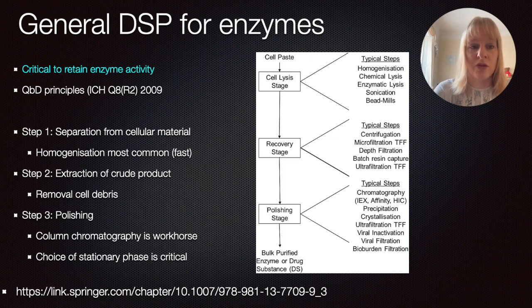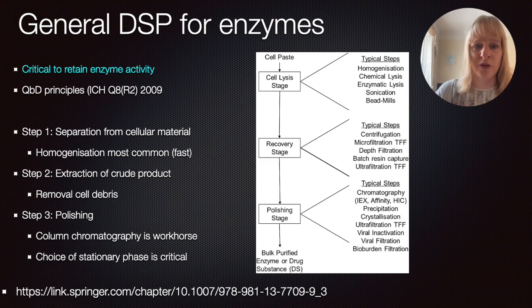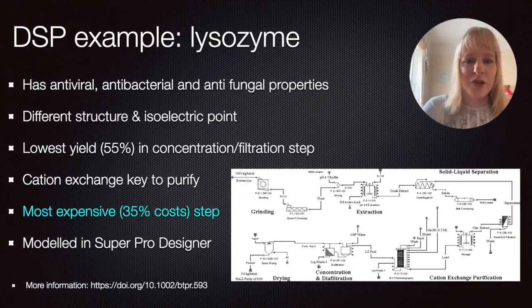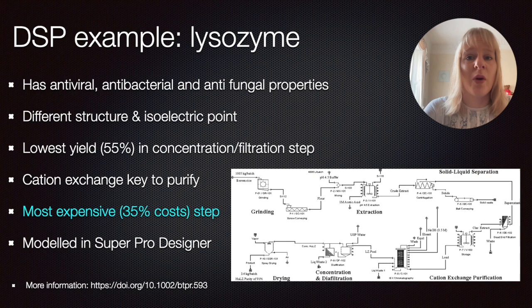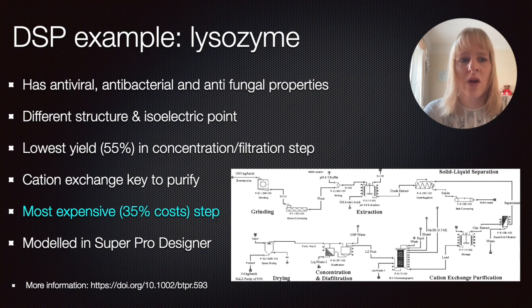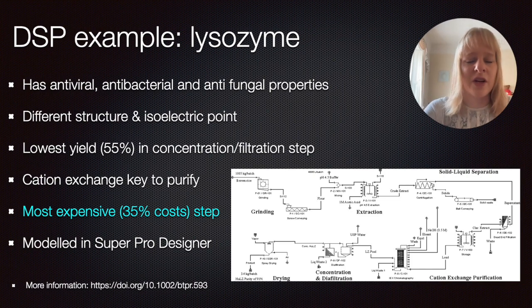Now let's look at two examples. The first one is lysozyme — a very important compound because it has antiviral, antibacterial, and antifungal properties, making it a natural type of antimicrobial compound often used as a food additive with many other applications. The origin of lysozyme — for instance, whether it comes from hen egg or different sources — can give it very different structures.